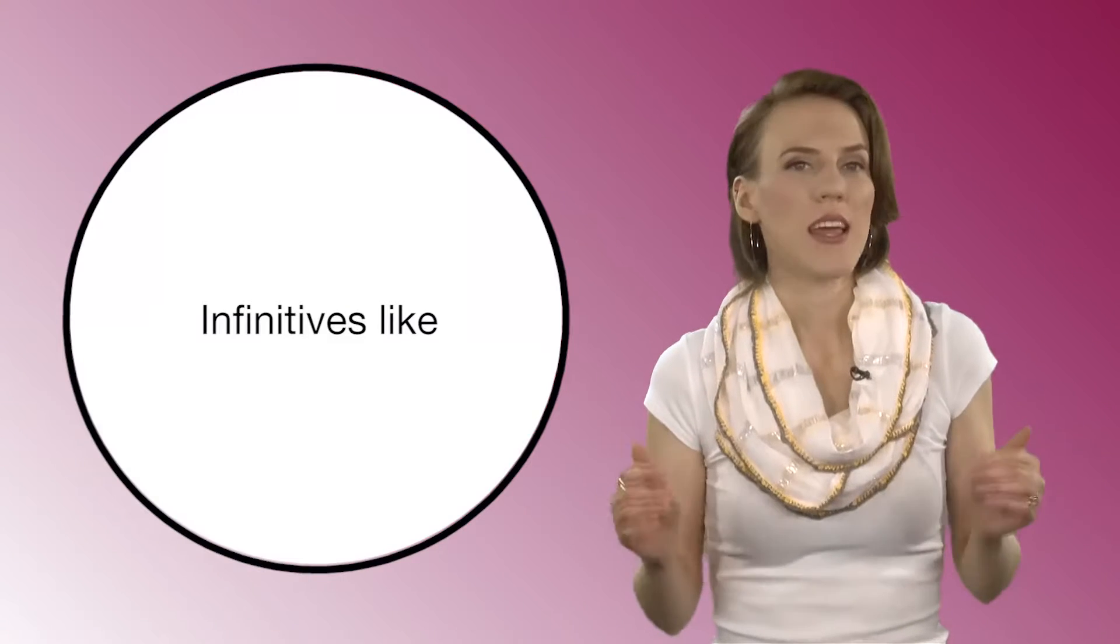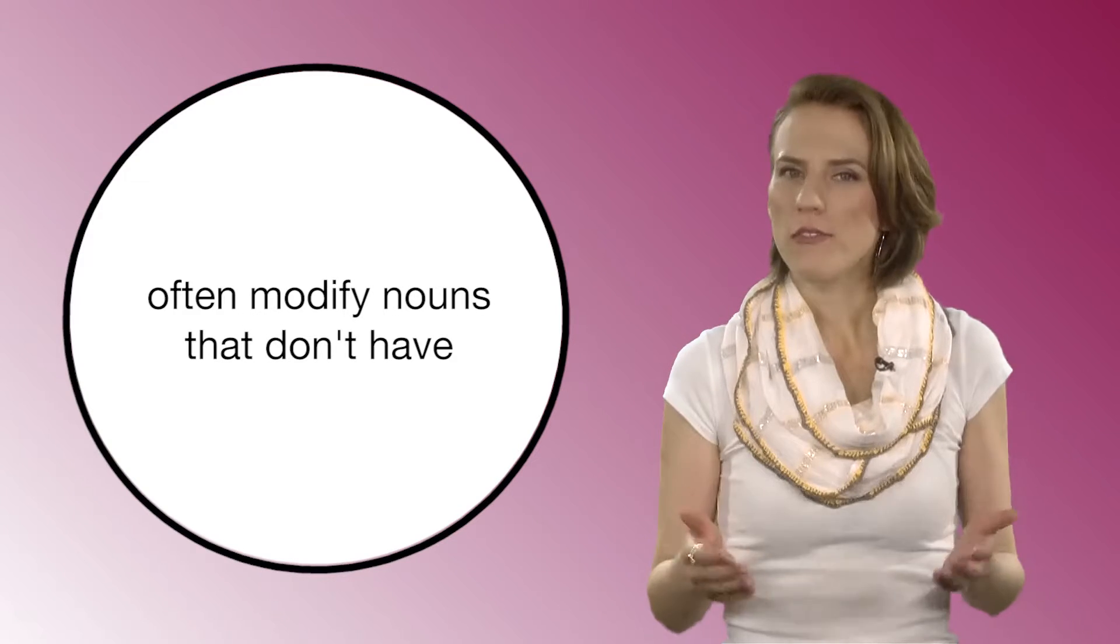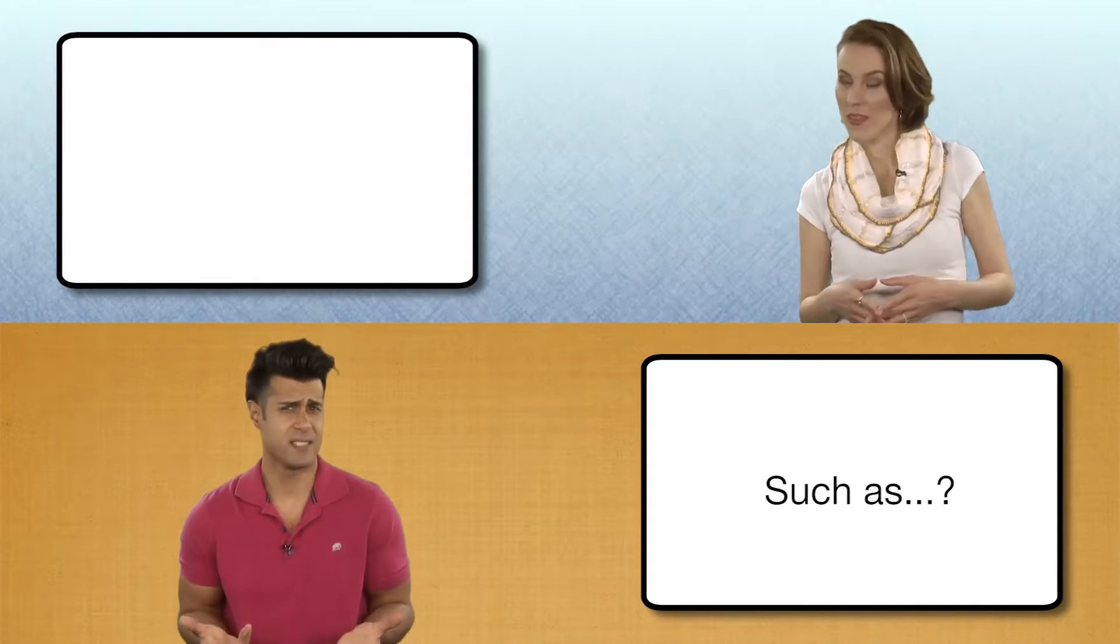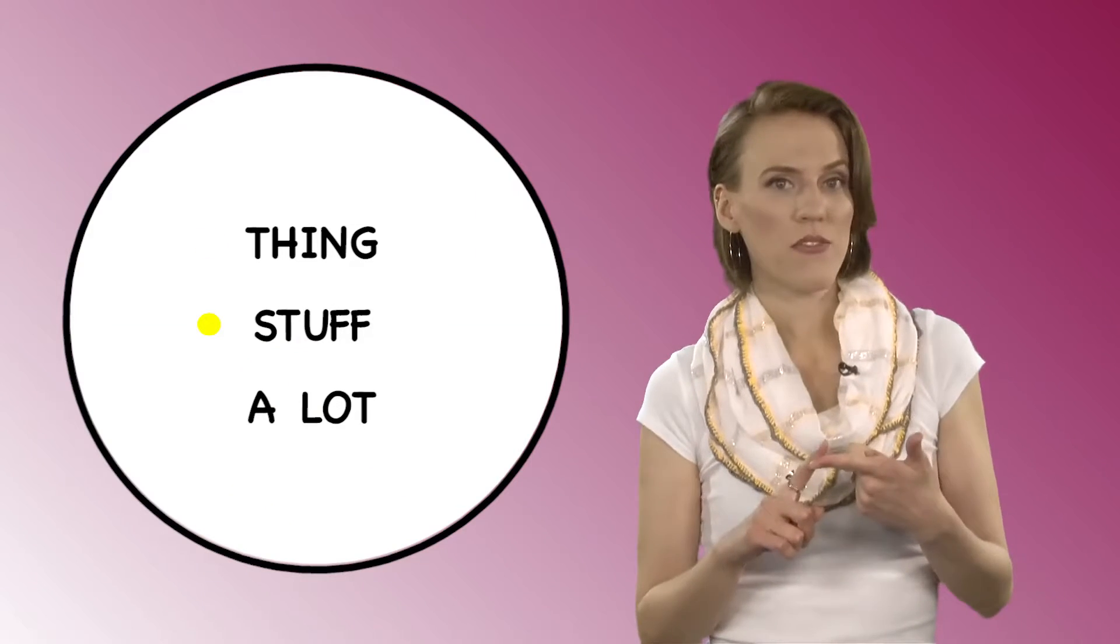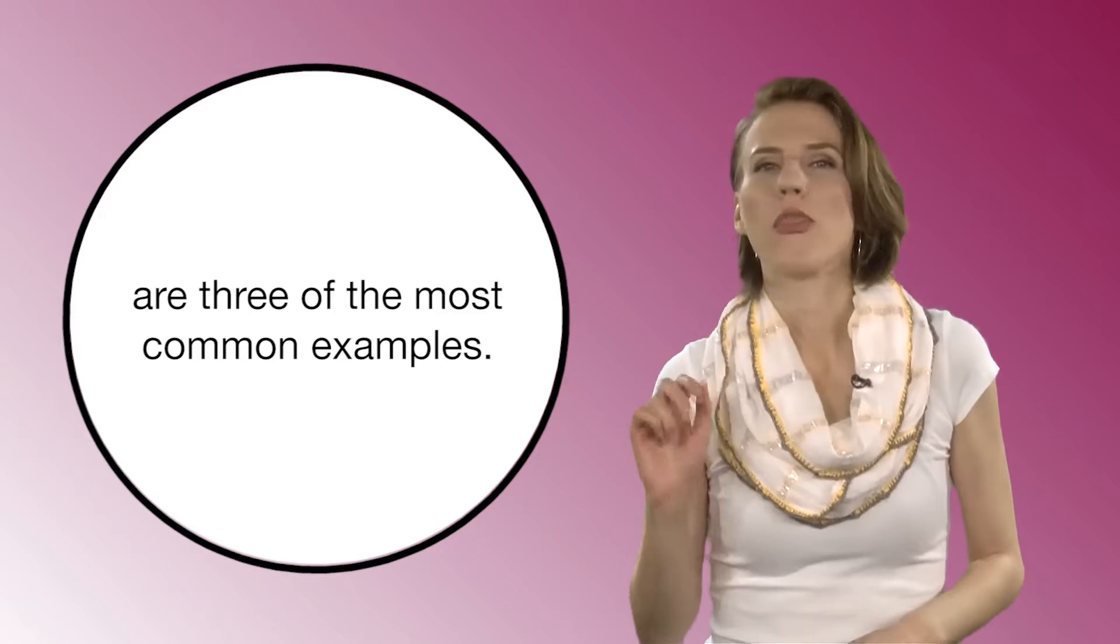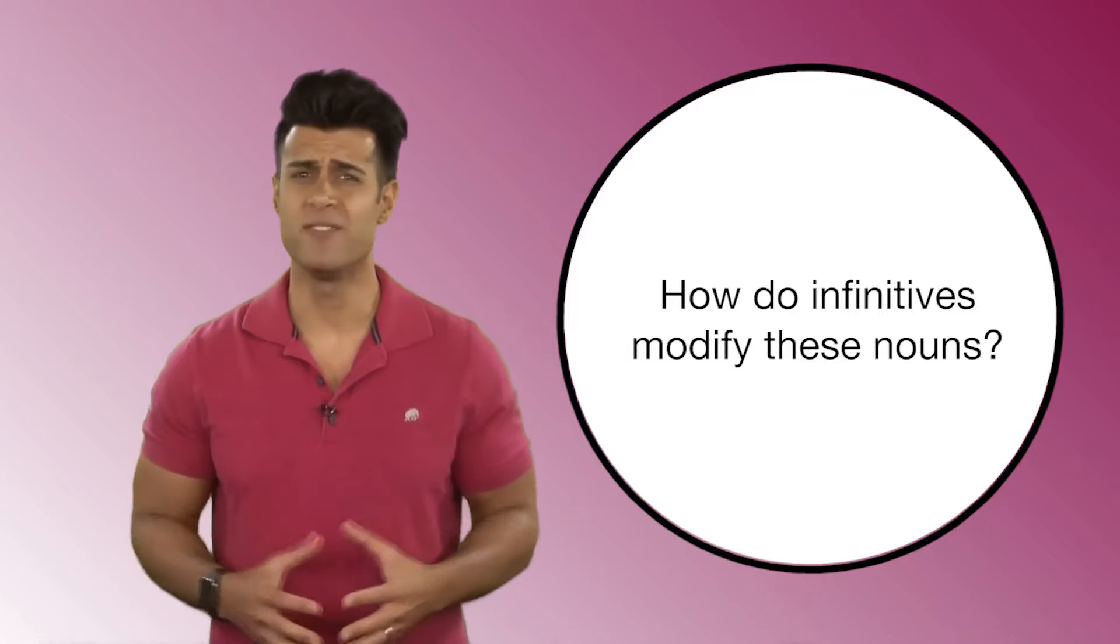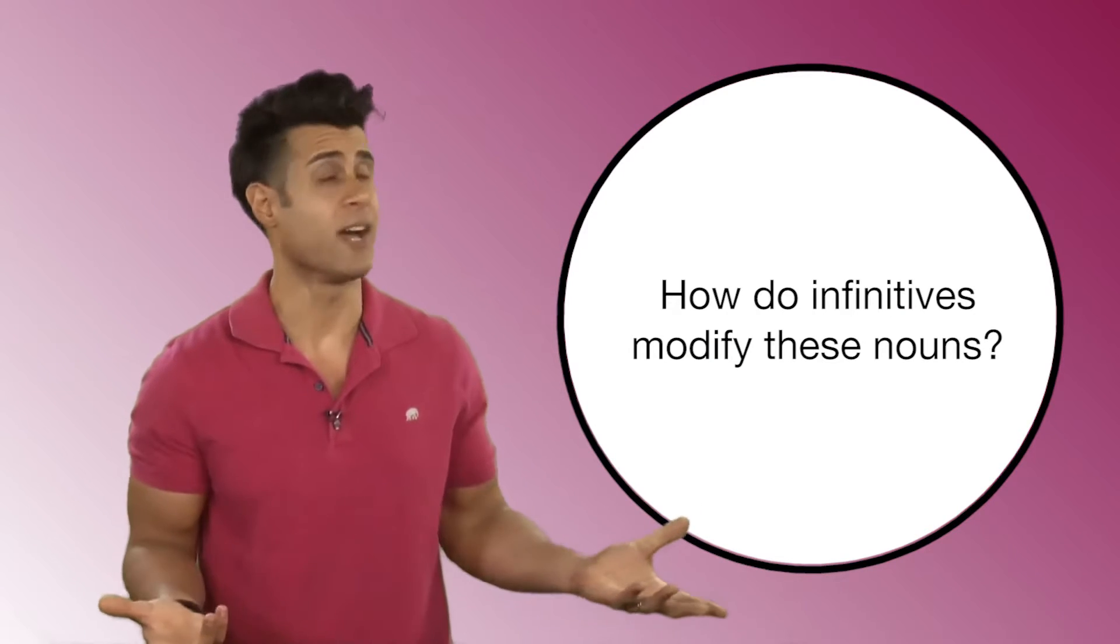Infinitives like to talk or to say often modify nouns that don't have clear meanings. Such as? Thing, stuff, and a lot are three of the most common examples.